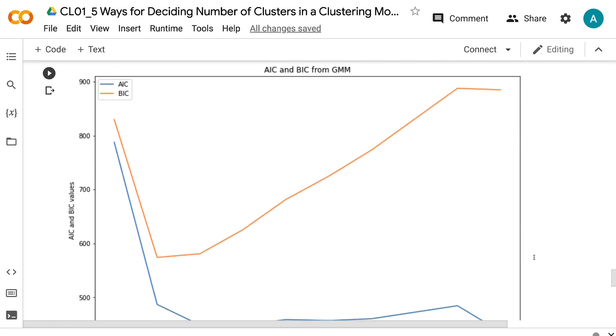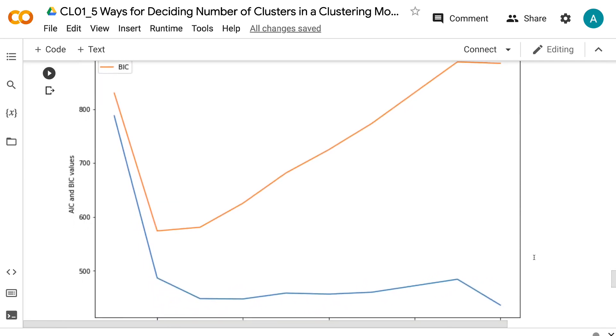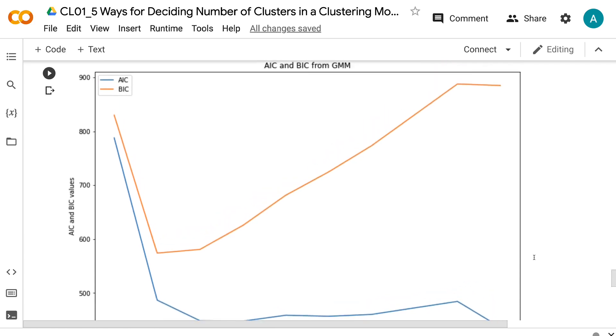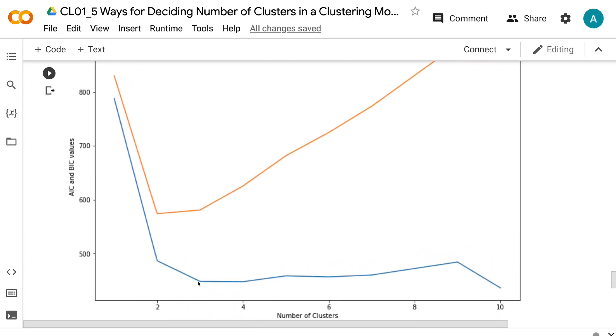From the visualization, we can see that AIC has the smallest value at three clusters, although the AIC value for 10 clusters is smaller. The difference between three clusters and 10 clusters is quite small. In this case, we will choose a simpler model with three clusters.